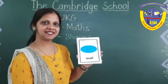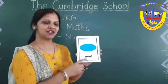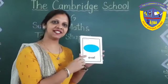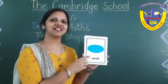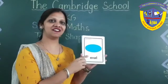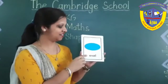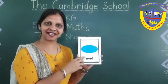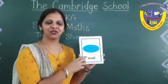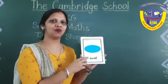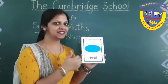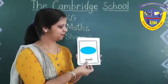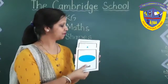Next is, which shape is this? Yes — oval. Very good. Oval has any corners? No, oval has no corners.